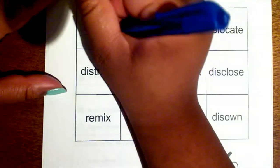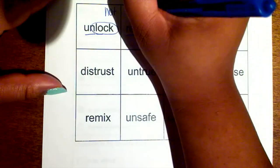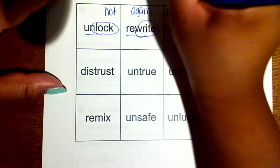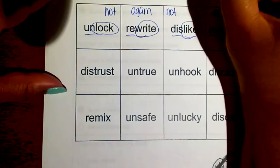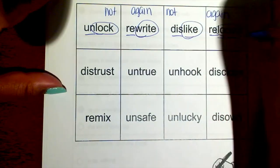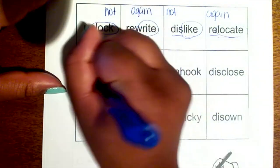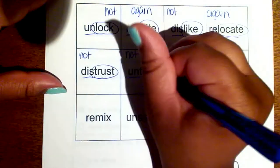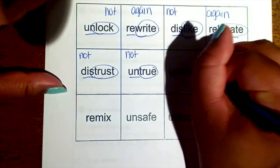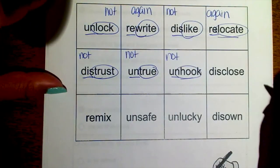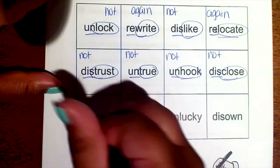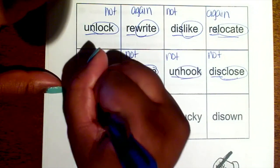'Un-' is a prefix that means 'not' or 'the opposite of,' so we have 'unlock.' 'Re-' means 'again,' so 're-write.' 'Dis-' means 'not,' so 'distrust' means not to trust. 'Un-' means not or the opposite of — if something is 'untrue' it's not true, 'unhook' means not hooked. 'Re-' is a prefix that means 'again.'